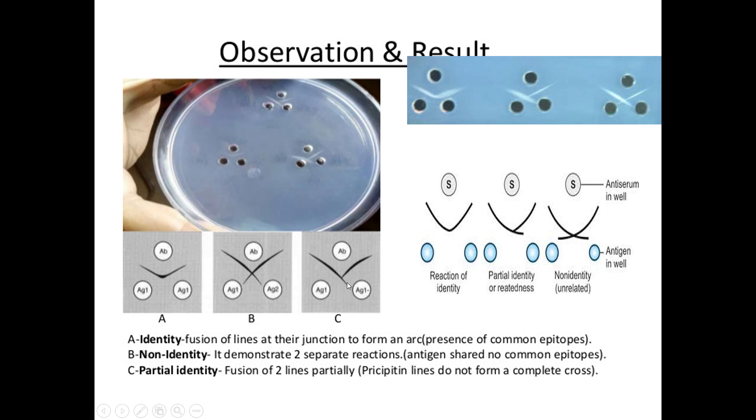It is called the reaction of partial identity. It is visualized as a Y-shaped precipitin line. This is how we can perform the Ouchterlony double diffusion in the laboratory. Thank you.